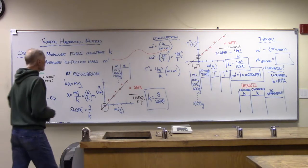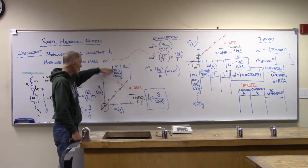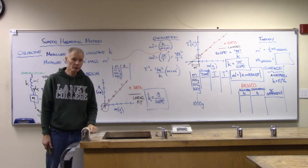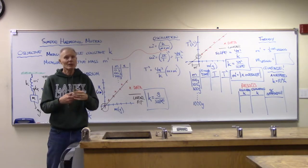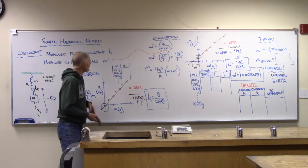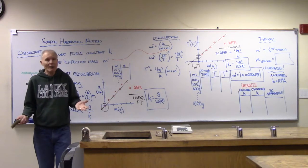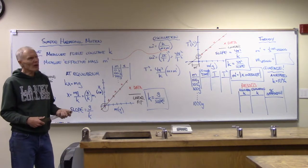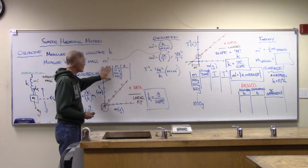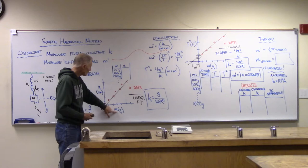We'll have a data table with masses in 100-gram increments from zero all the way up to 1000 grams — at 1000 grams the spring is stretched out quite a bit. We need to get x values for all of those, and that seems like something we could graph. It's been a while since we graphed anything. The graph would be distance of stretch as a function of m.